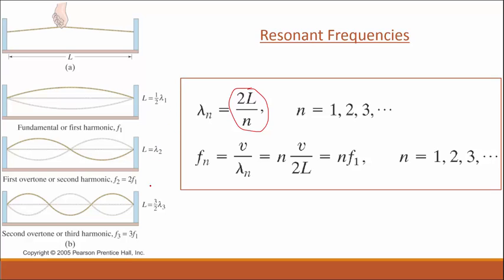So this formula here will reproduce all of these equations here for any number of harmonic. Now we use our equation that we had before, V equals F lambda, and we rearrange that. So F equals V over lambda. Plug this in for lambda. And since it's in the denominator, it gets flipped. And so you end up with N V over 2L.